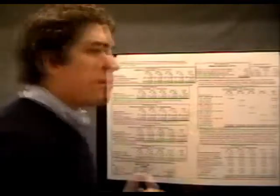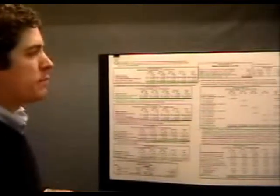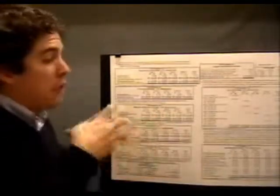Now let's jump over to number 6. At 6, we're going to come up with a budgeted manufacturing cost per boat, because now that we have raw materials, direct labor, and overhead, we know the total cost.